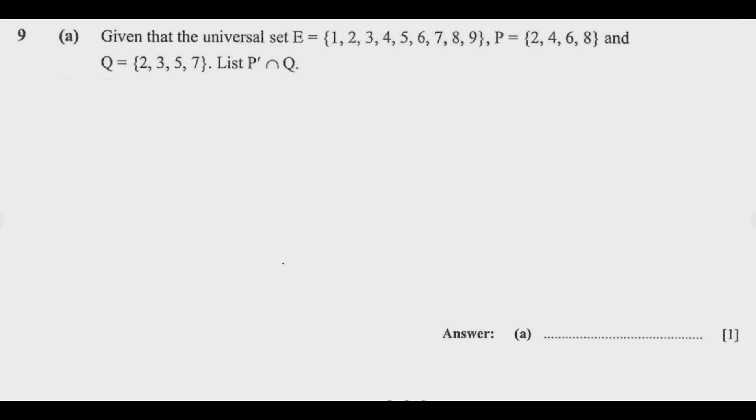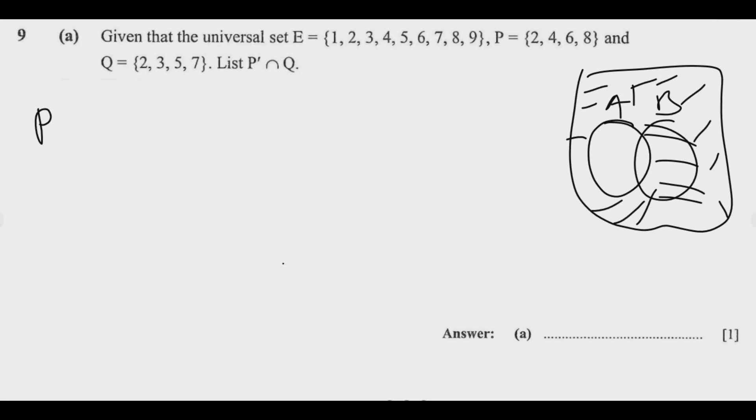It's a matter of understanding that complement means the elements that are not found in that set. So if you have a set within the universal set, the complement is anything outside in that set. That's the principle we need to understand. So let us find P complement. We're looking for elements that are found in the universal set but they're not in P. If you look at P, there is 2, 4, 6, 8.